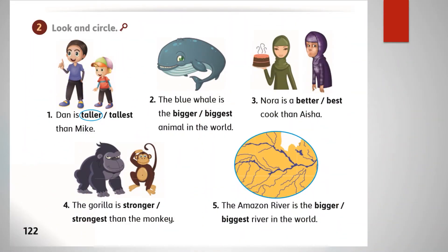We are going to look at 'write and circle'. We have comparative and superlative according to the picture. Number one example: Dan is taller than Mike - he is comparing Dan with Mike. Taller is comparative. The blue whale is the biggest animal in the world - the biggest, superlative degree.